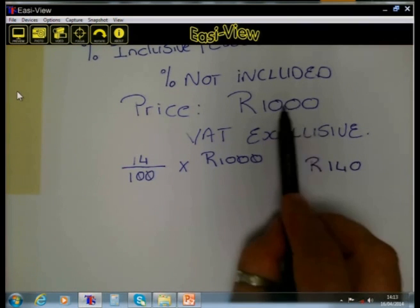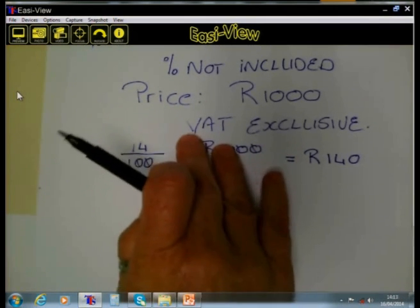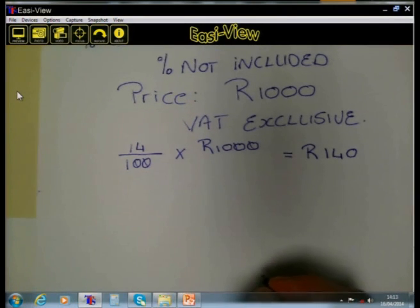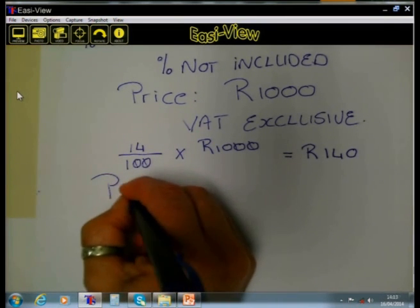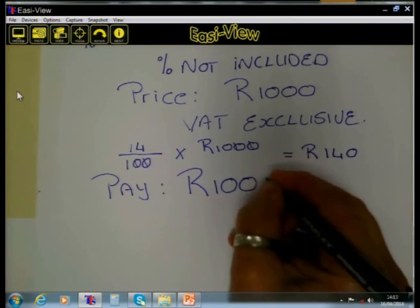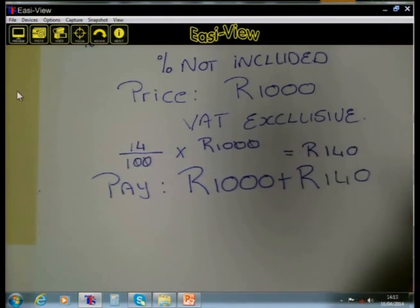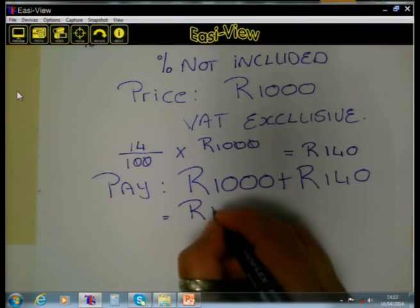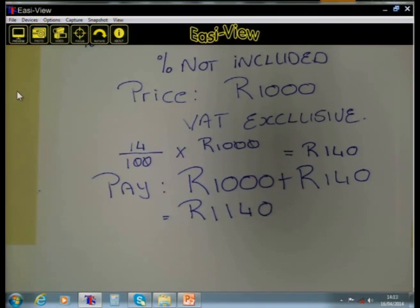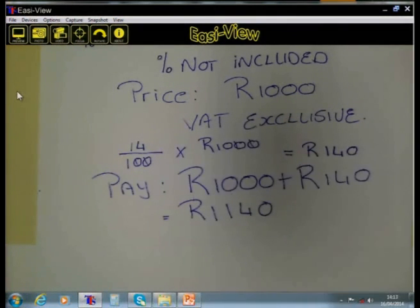So the cost price of the article is 1000 Rand and the VAT is 140 Rand. If I now want to know what I have to pay for that article, I have to add the two amounts — the 140 Rand to the 1000 Rand — and I will end up paying 1140 Rand for that item. One way of doing it is by first calculating the VAT and then adding it to the price of that article.